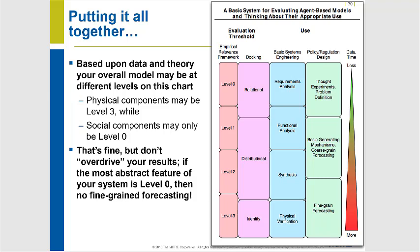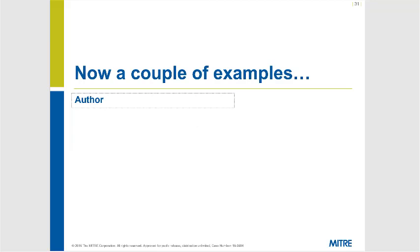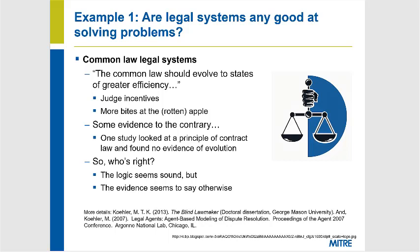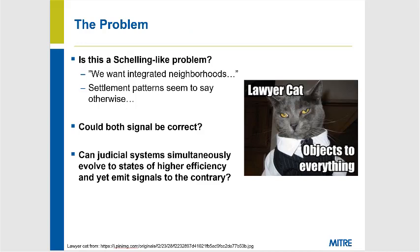Now let's move on to a couple of examples. We're going to finish with two examples: one that's pretty strictly social and one that mixes social and physics. The first example is basically: are legal systems any good at actually solving problems? There's an awesome little diagram on slide 32 about this.